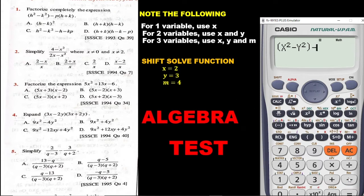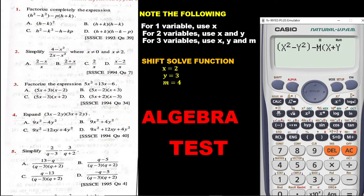Then we have minus. For three different variables we are using X, Y, and M. We have X replacing H and Y replacing K. Now we use M to replace P — click alpha and then M. Then open the bracket, click alpha X, then plus, then alpha Y, and close the bracket. Once you have finished entering, go back to the question to cross-check that you have entered the right expression on the calculator.